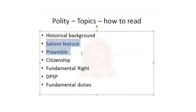Citizenship chapter is third priority — so far no questions have been asked from it. First read salient features and preamble, then fundamental rights, DPSP, fundamental duties, then historical background, and finally citizenship. However, read the recent amendments: Citizenship Amendment Act, NRC, NPR, Census, House Listing, Socioeconomic Census — there may be questions on National Population Register, National Register of Citizens, CAA, and Census.